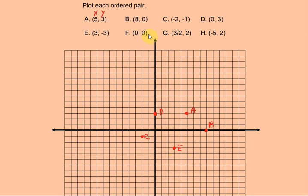Point F is at 0, 0. That means I start at the origin and don't go left, right, up, or down — so 0, 0 are the coordinates for the origin. That's point F.